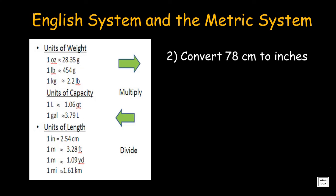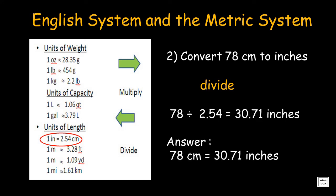Convert 78 centimeters to inches. Notice from the table, it's right to left. Thus, you divide. The answer is 30.71 inches.